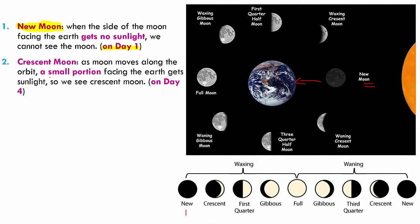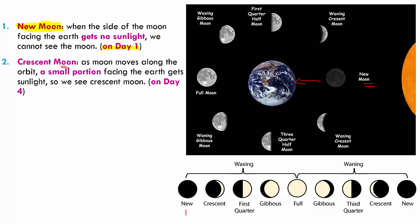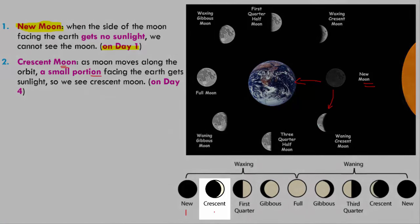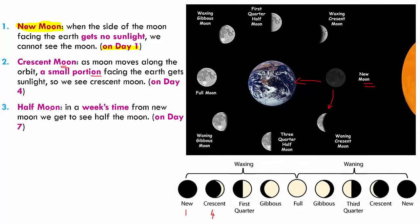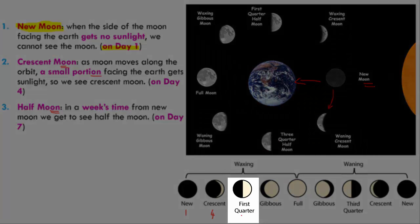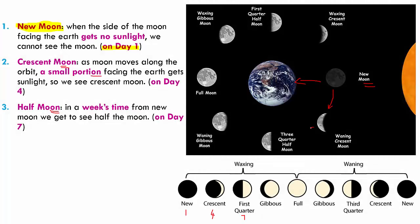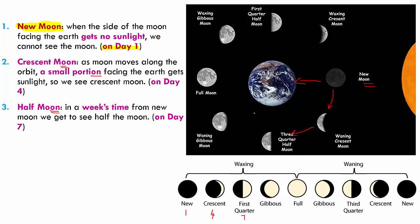Then we move on to what is called the crescent moon. As the moon moves along its orbit, a small portion of the moon faces the earth, so that portion gets sunlight and we see a crescent moon. This is seen on day four. After the crescent moon, we have the half moon. Half moon happens in a week's time from day one, and you see half the moon — this happens on day seven. From the crescent moon, we move towards the half moon because half the moon gets the sun's light.